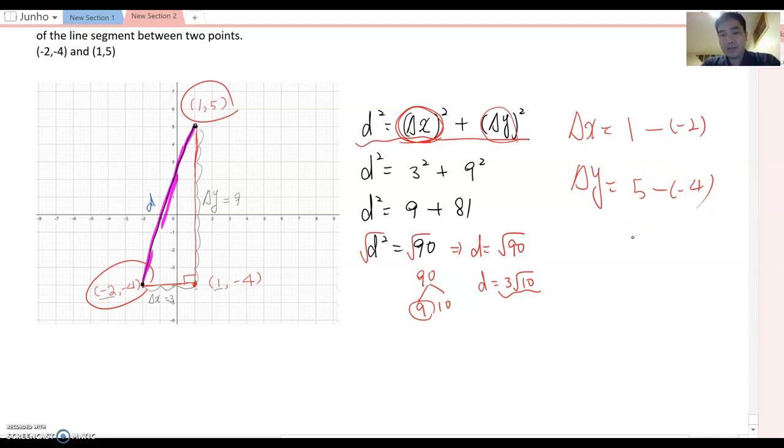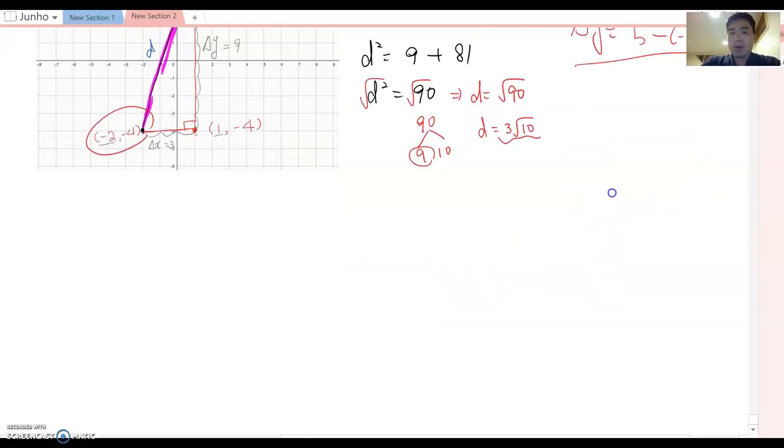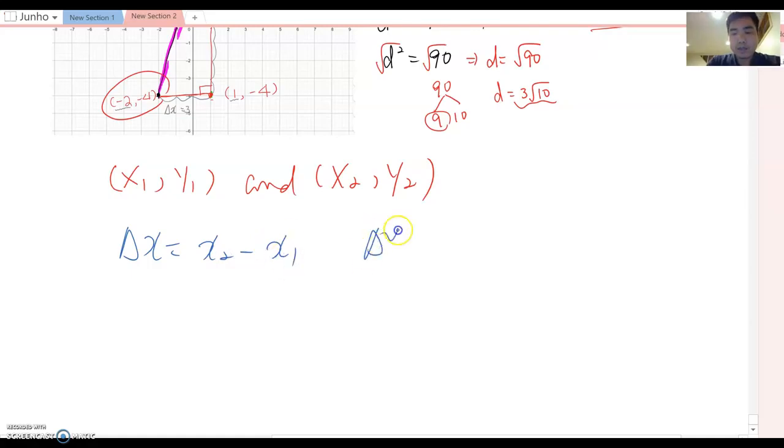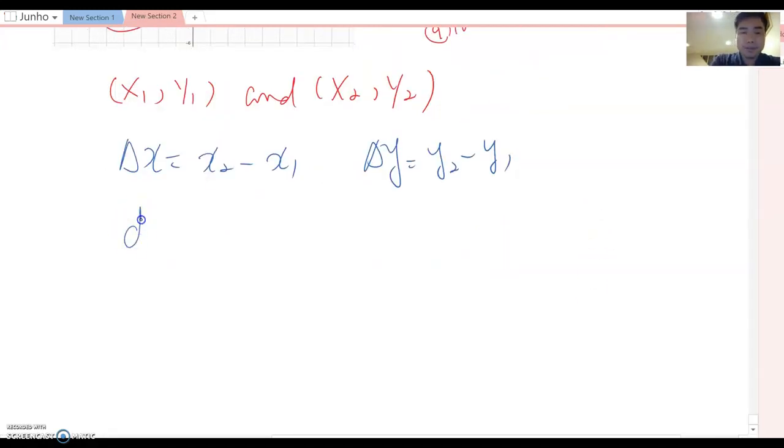Now, but what about other cases? In this case, we have two fixed points, (-2, -4) and (1, 5). That's why delta x setup becomes like that. But what if we have random points? Then how can we figure out distance? So I'm going to set up (x₁, y₁) and (x₂, y₂). Then delta x will be x₂ - x₁, and then delta y becomes y₂ - y₁. Then we know that the Pythagorean theorem: d² = (delta x)² + (delta y)².